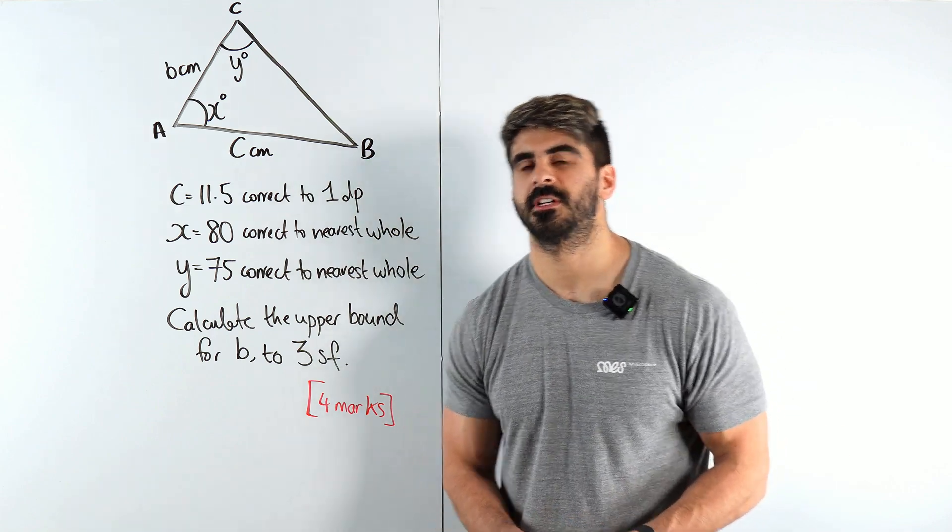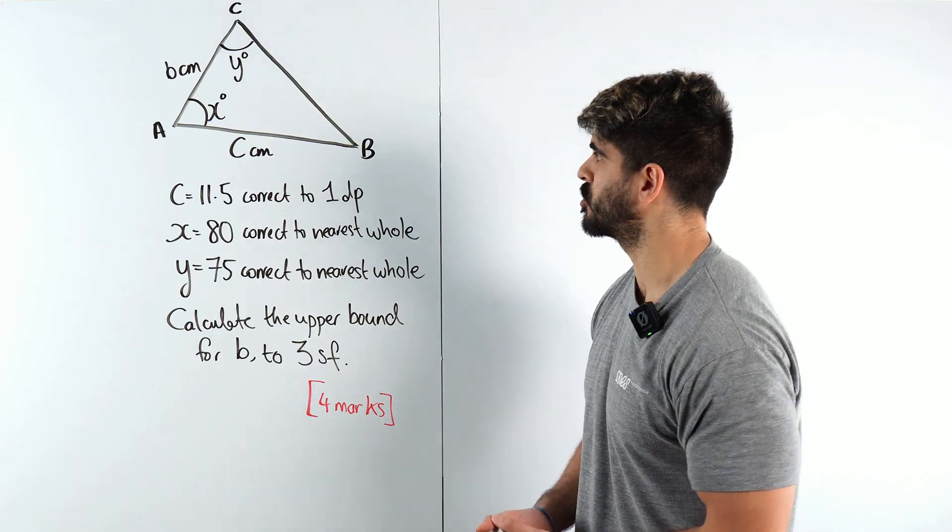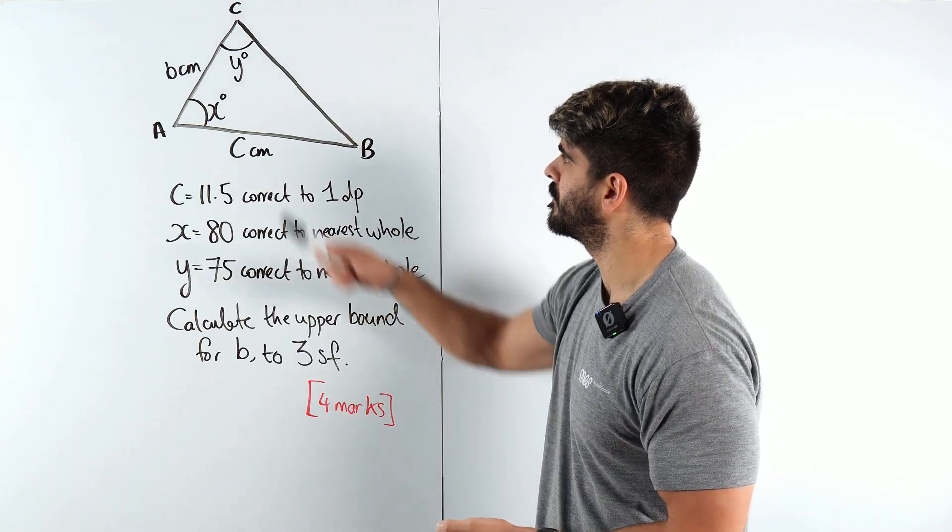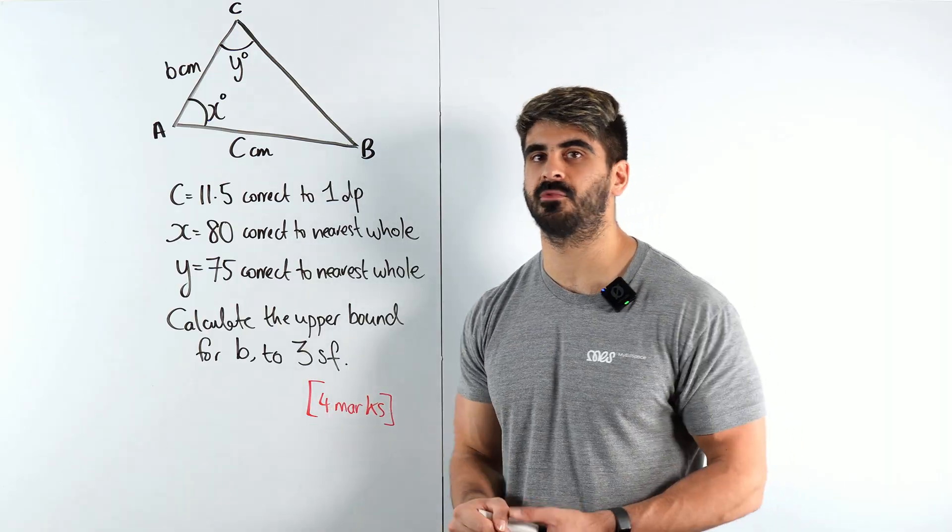This Argos GCSE question had a lot of 16-year-olds crying. Let's make sure we know how to do it. So we've got this triangle with angles x and y, sides b centimeters and c centimeters. It's already giving me sine rule vibes.